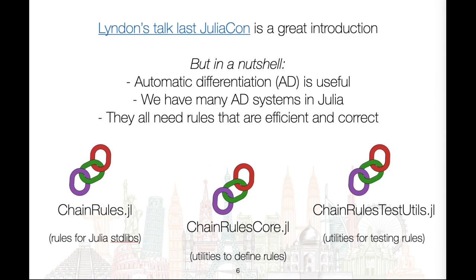The ChainRules project fills this niche. It provides common tangent types and utilities for defining rules in ChainRulesCore, utilities for testing rules using finite differences in ChainRulesTestUtils, as well as hundreds of rules for Julia's standard libraries in ChainRules.jl.